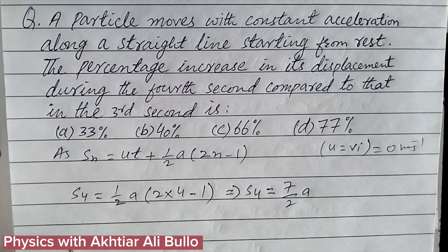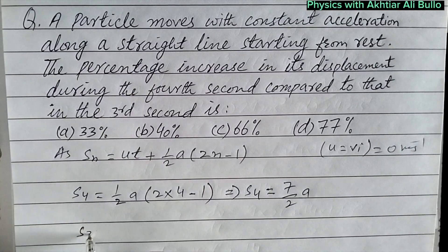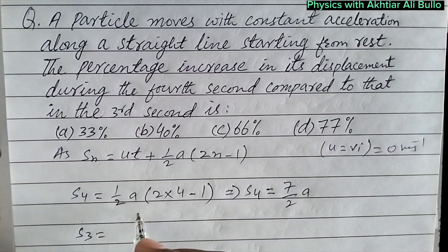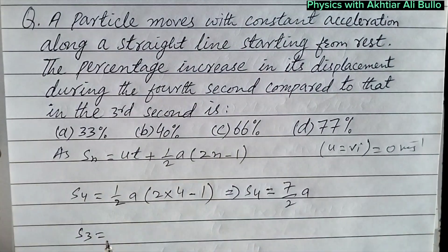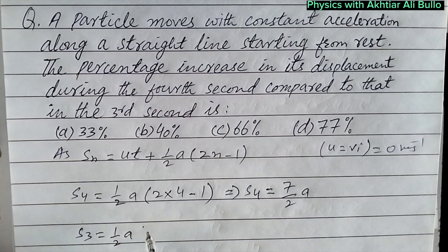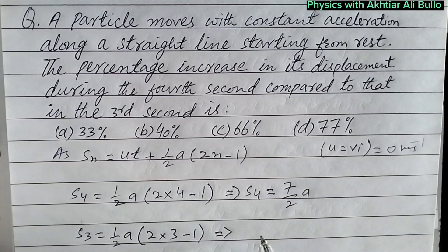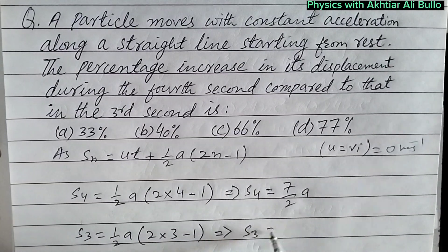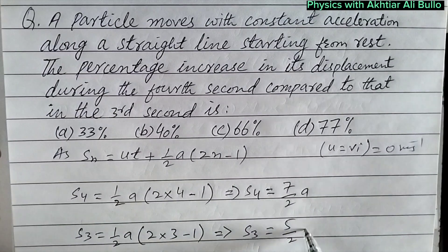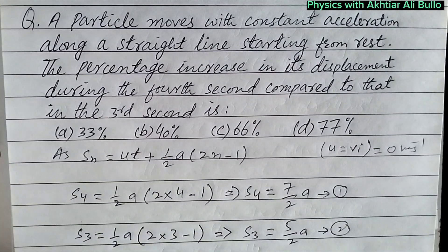Now we will calculate the displacement in the third second. Since initial velocity is 0, it will be (1/2)a × (2×3 - 1). So the displacement in the third second is 5/2 a. This is equation 1 and the previous result is equation 2.